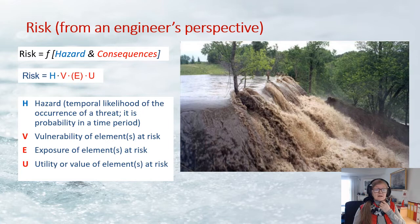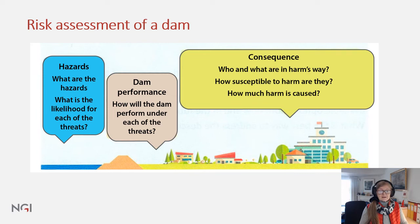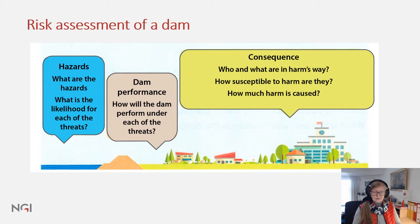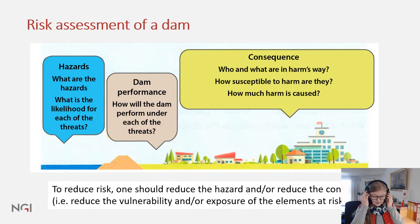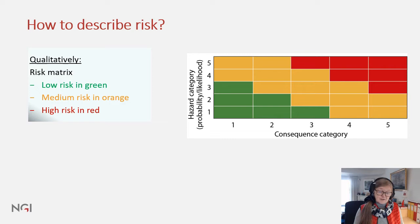Risk, from an engineer's point of view, is a function of the hazard, threat, and consequences. For a dam, you first evaluate the hazards — what are the hazards? Earthquake at 10,000 years, storm. What is the likelihood for each of these threats? Then you look at the performance of the dam under each threat. Then you look at the consequence: who and what is in harm's way, how susceptible are these elements, and how much harm will be caused. To reduce risk, one should reduce the hazard and reduce the consequence by reducing the vulnerability and the exposure of the element.